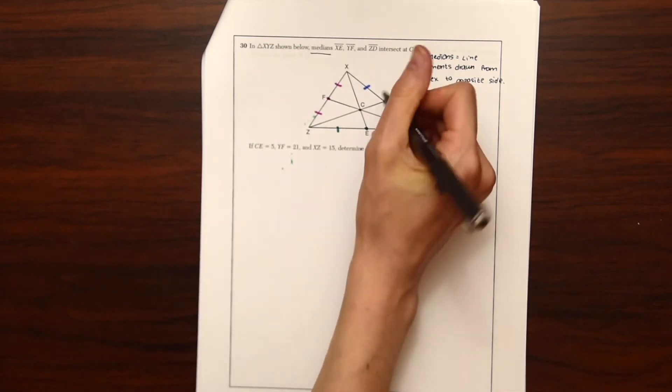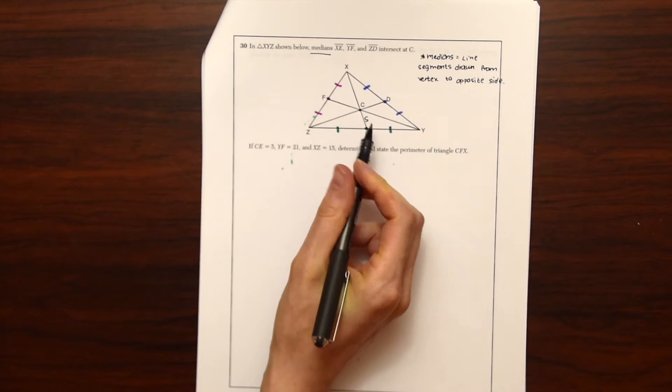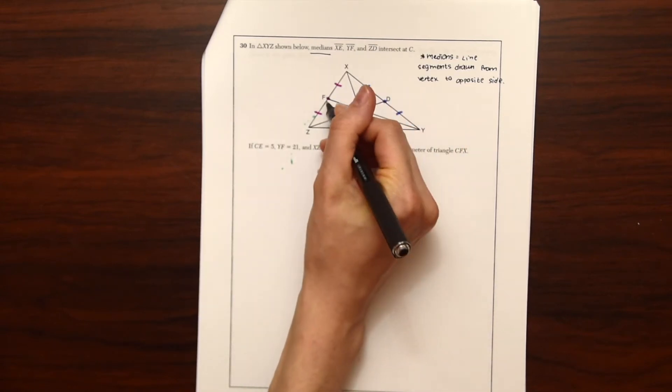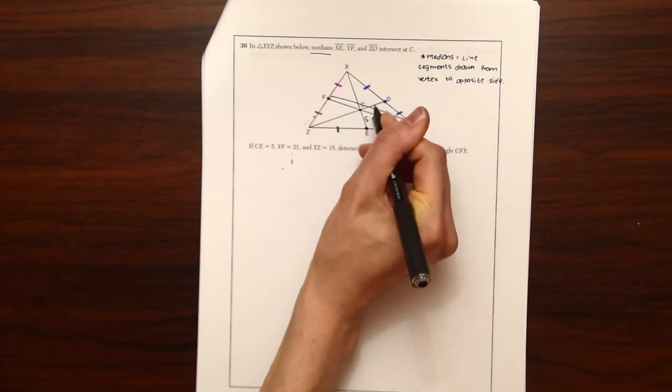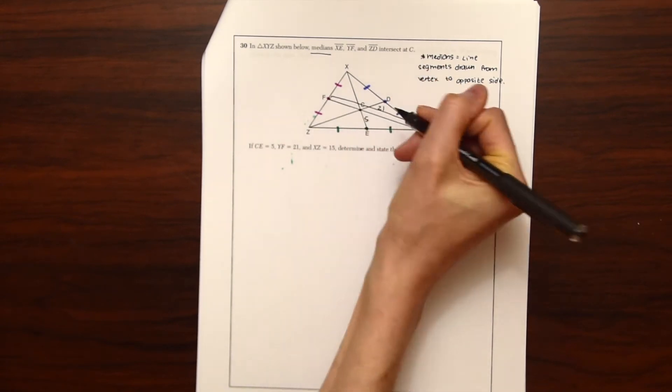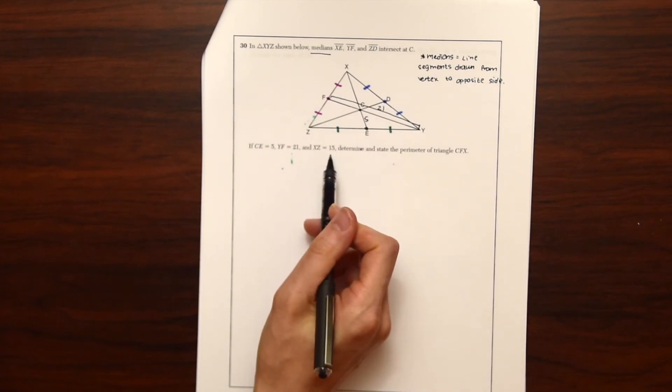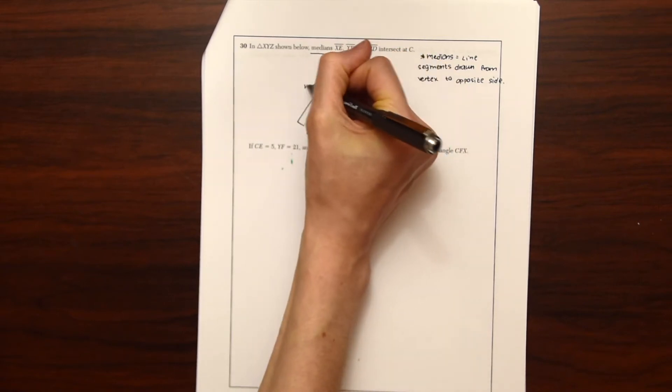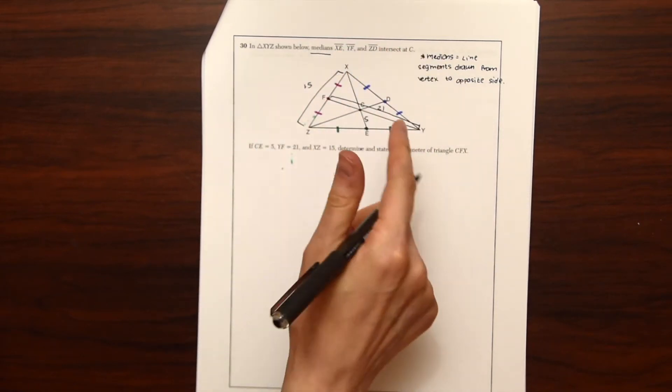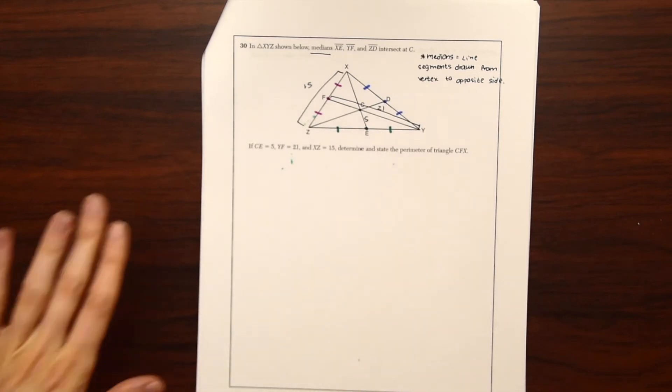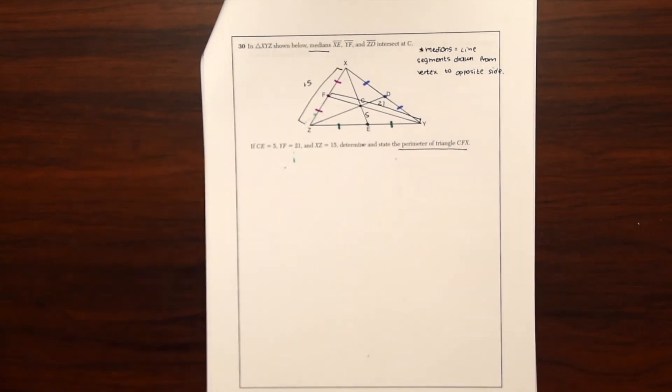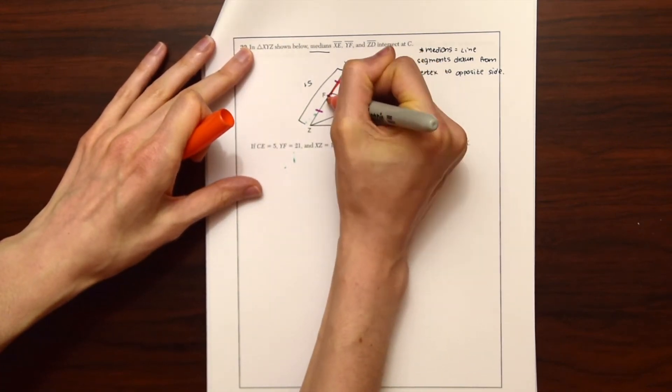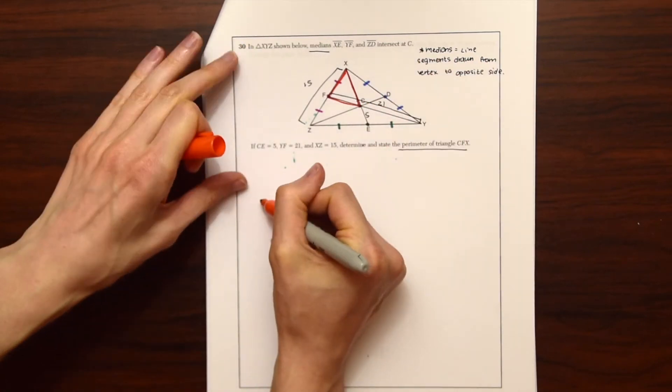So if CE equals 5, YF, this entire thing is equal to 21. So I'm just gonna mark it like this. This whole thing right here is equal to 21. And XZ is equal to 15. So XZ is equal to 15 right here. Determine and state the perimeter of triangle CFX. So let's just highlight what CFX is. I'm going to highlight it in orange and I'll draw it bigger over here.